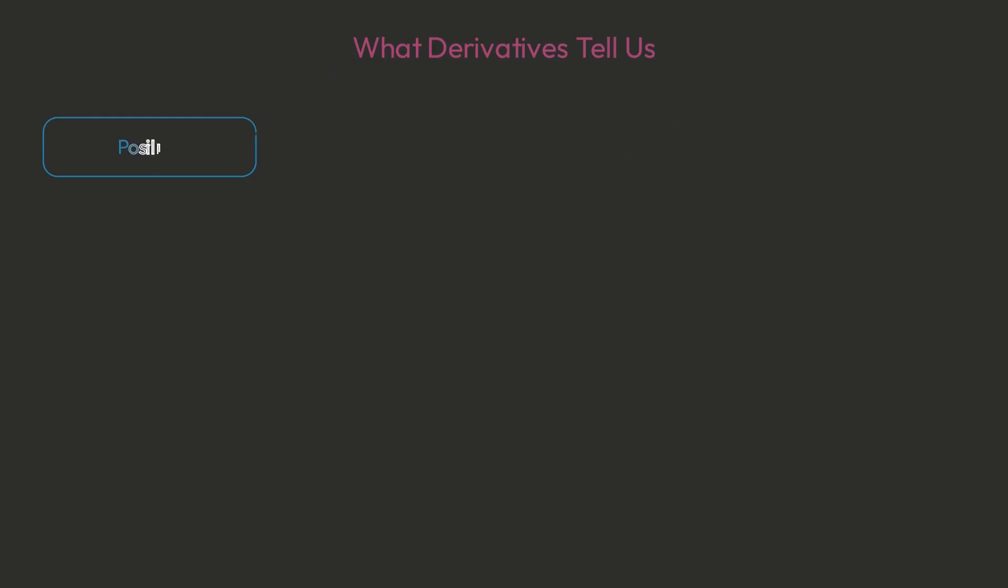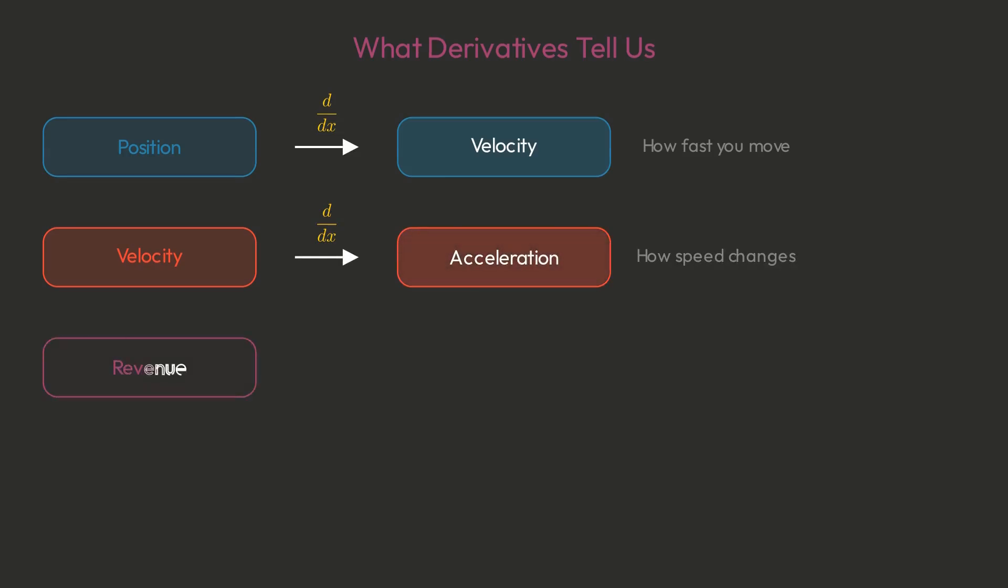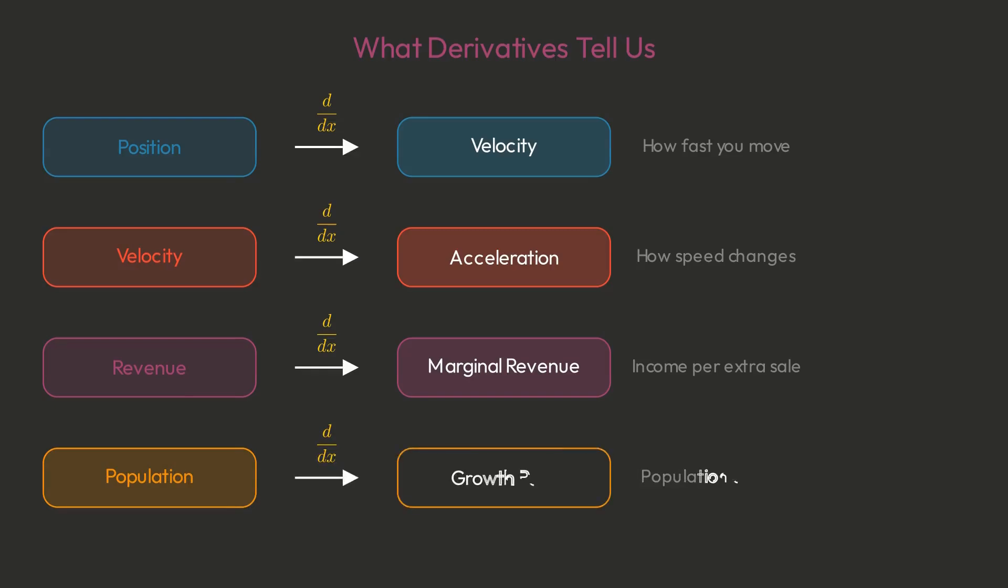Derivatives aren't abstract symbols. They reveal the structure of change. If f of x represents position, then f prime of x is velocity. If f of x represents velocity, then f prime of x is acceleration. In economics, if f of x is cost, then f prime of x is marginal cost. In biology, if f of x is population, then f prime of x is growth rate.